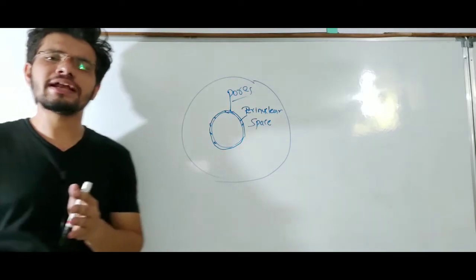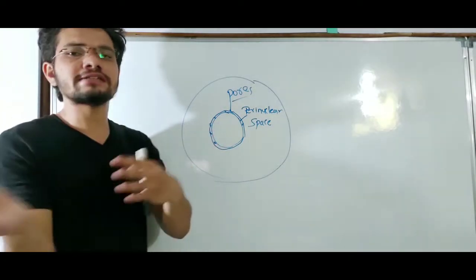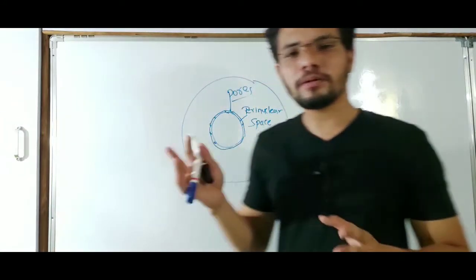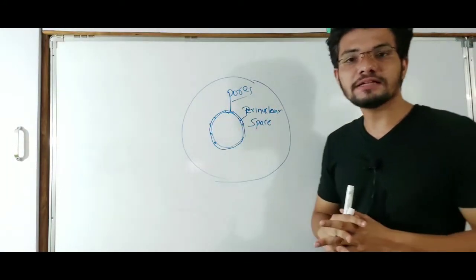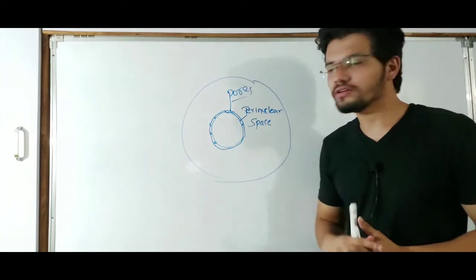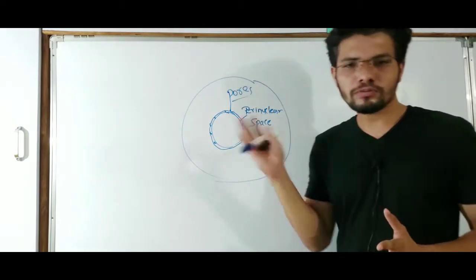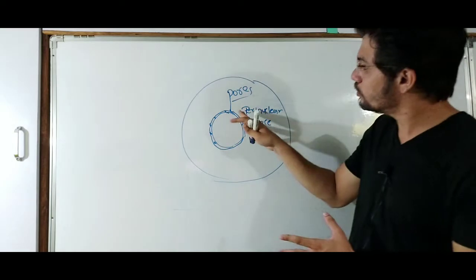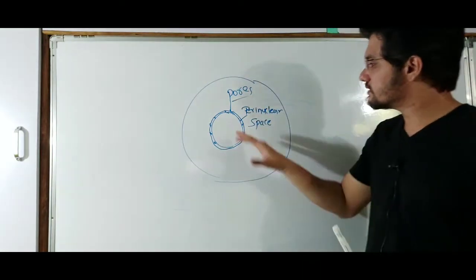Through these pores, some components like proteins and mRNA pass from the nucleus to the cytoplasm and from the cytoplasm to the nucleus. For transport purposes, these pores are used by the cell to transport RNA molecules and protein molecules in both directions.